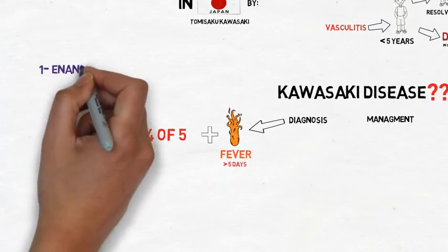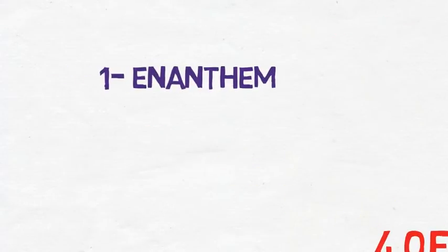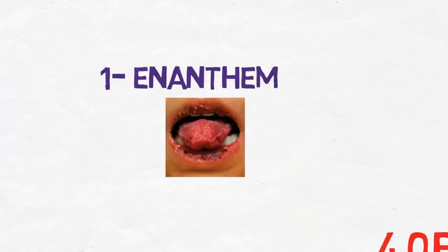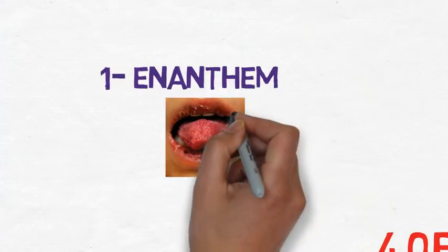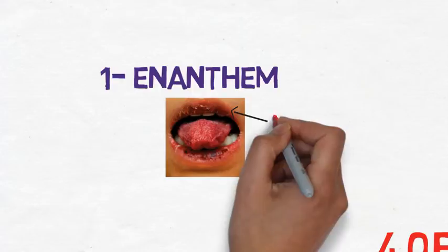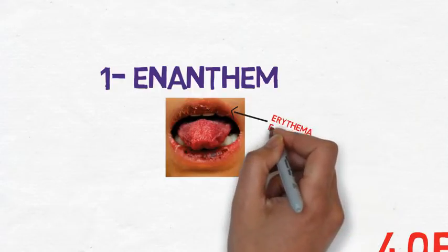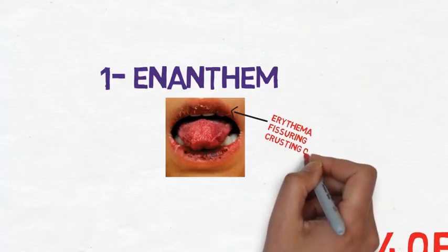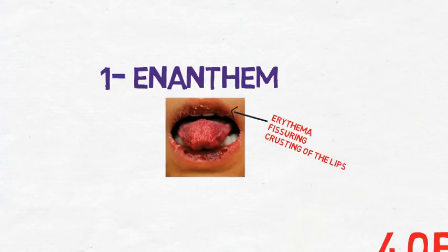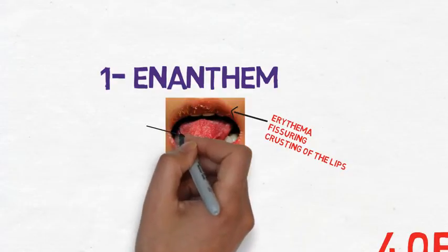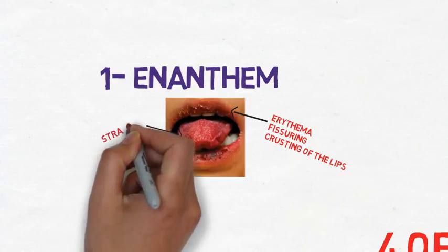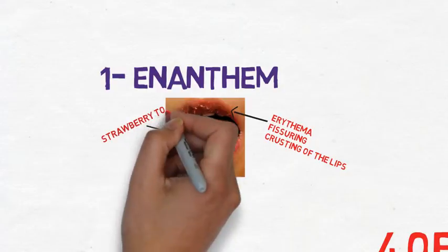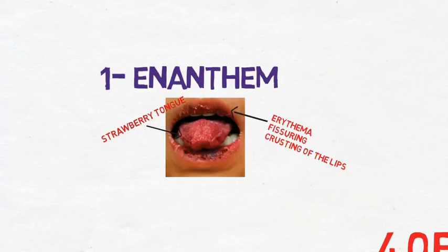First of all, we need enanthema or oropharyngeal changes. They mainly affect the lips with erythema, fissuring, and crusting. They also affect the tongue in the so-called strawberry tongue, which is caused by injection of the tongue.